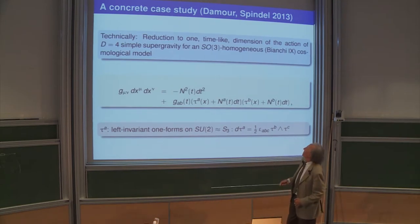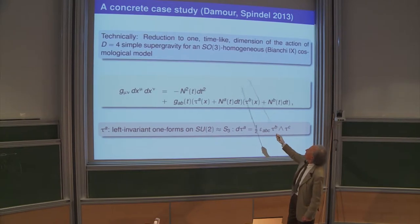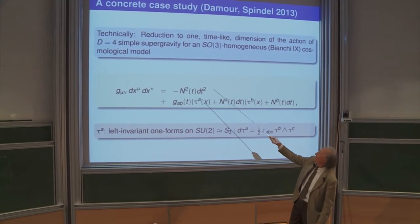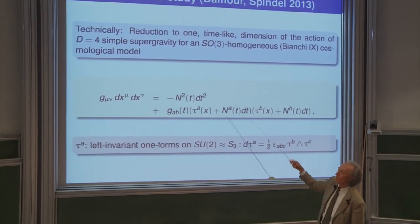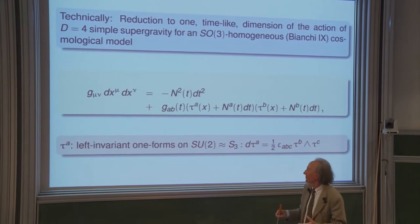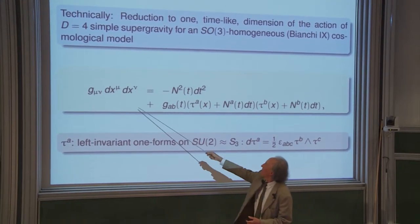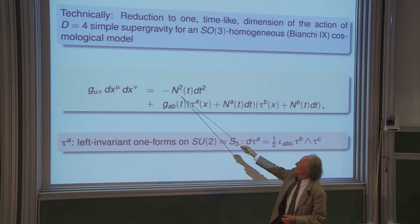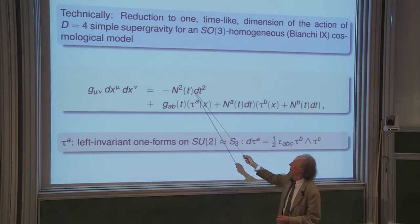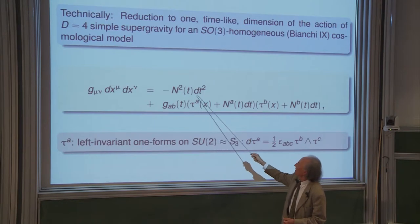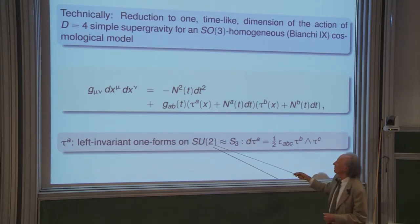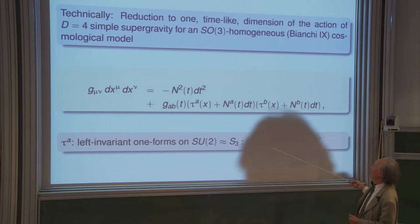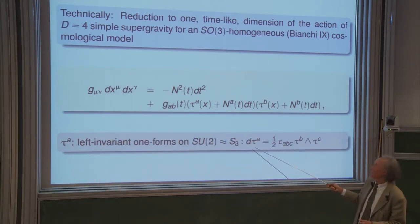Technically, we consider the action of simple supergravity over what is called a Bianchi IX cosmological model — the triaxially squashed 3-sphere — which is a spacetime geometry where time is a gauge factor, and the space geometry is a function of time expressed in the local frame made of left-invariant one-forms over SU(2).